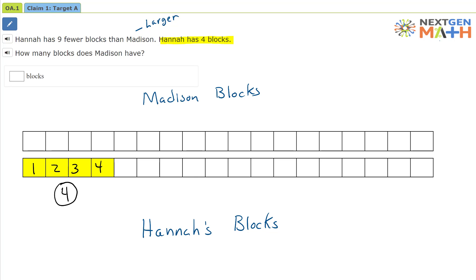The problem also reads this. Hannah has nine fewer blocks than Madison. So let's go ahead and count the nine fewer blocks. One, two, three, four, five, six, seven, eight, nine. These blocks are the nine fewer blocks.